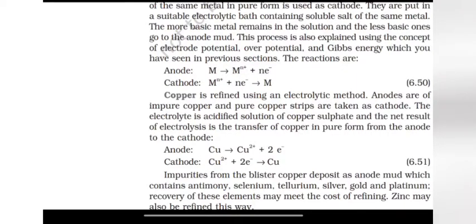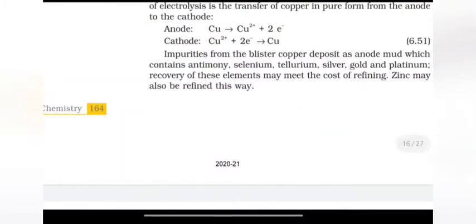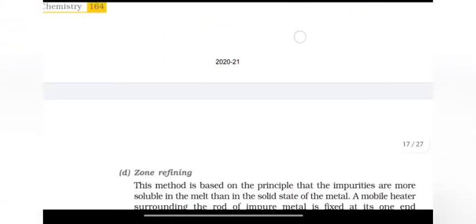Copper is refined using an electrolytic method. Anodes are of impure copper and pure copper strips are taken as cathode. The electrolyte is acidified solution of copper sulfate and the net result of electrolysis is the transfer of copper in pure form from the anode to the cathode. Impurities from blister copper deposit as anode mud which contains antimony, selenium, tellurium, silver, gold and platinum. Recovery of these elements may meet the cost of refining. Zinc may also be refined this way.